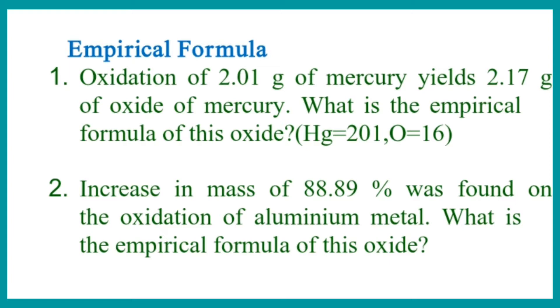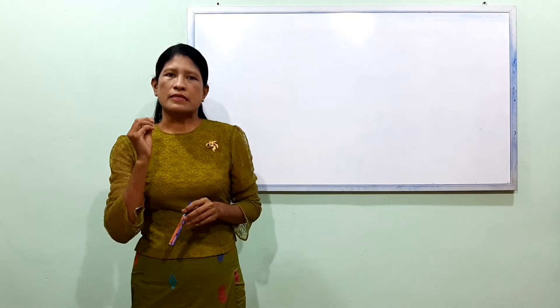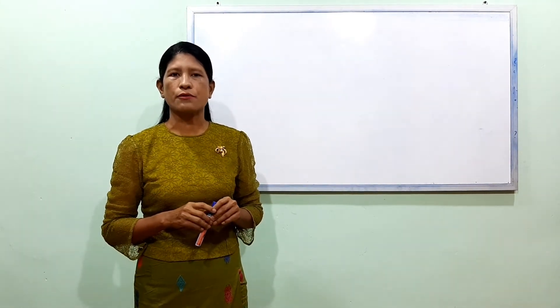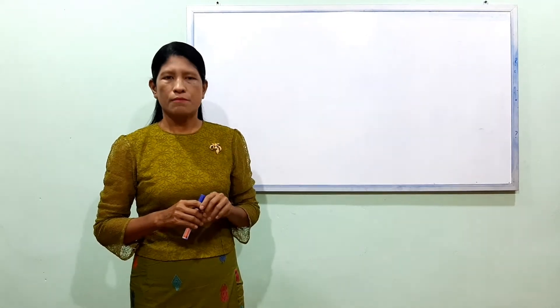Number 1: Oxidation of 2.01 grams of mercury yields 2.17 grams of mercury oxide. What is the empirical formula of this oxide?